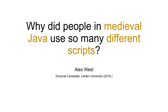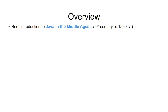Not many people use that term actually, but I do. I'm going to start talking about Java in general, just so you have an idea of where it is. What I mean by the Middle Ages is roughly the 4th century to the very beginning of the 16th century of the common era.